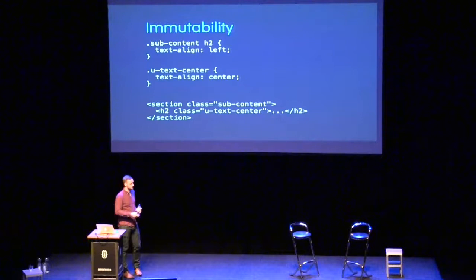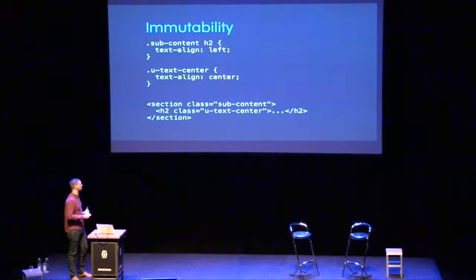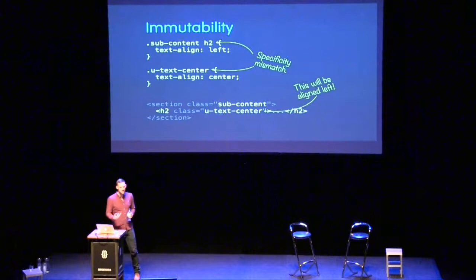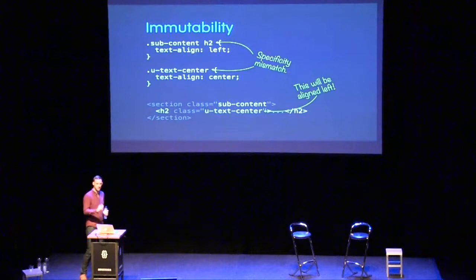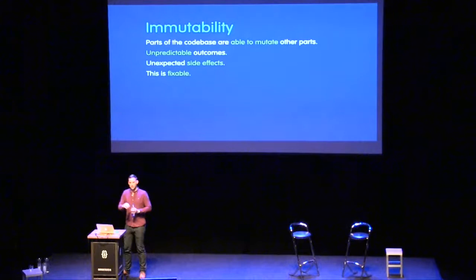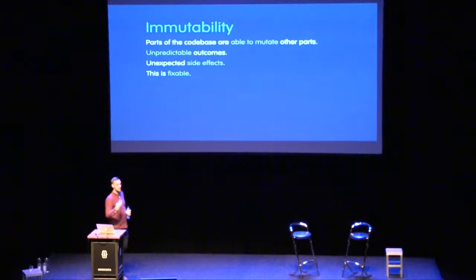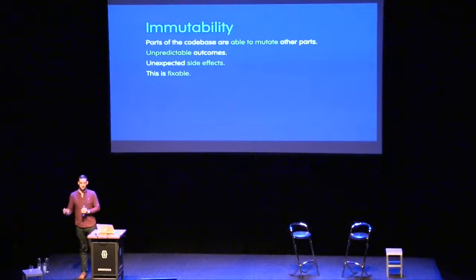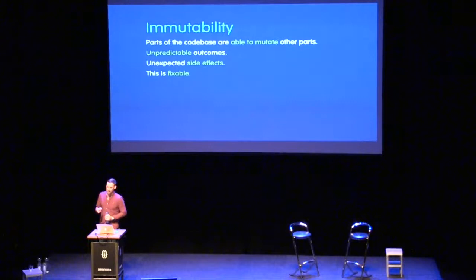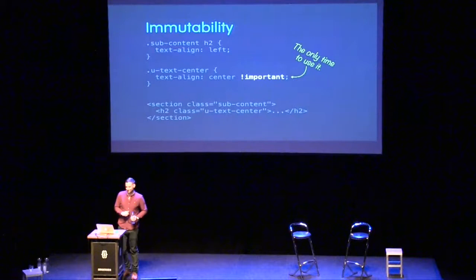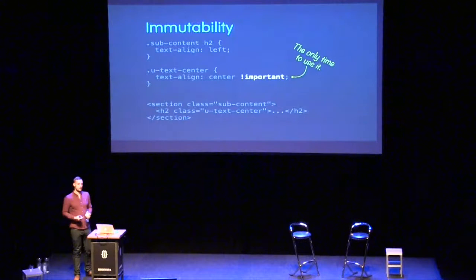Another example of mutations in CSS: we've got a specificity mismatch — the selector `.sub-content h2` has a higher specificity than `.text-center`, which means this heading will be text-aligned left despite having a class of `text-center` applied. The problem is that other parts of our codebase can modify unrelated bits because CSS operates in a global namespace. We get subtree collisions and regressions — a completely unrelated selector has mutated the behavior of a utility class.